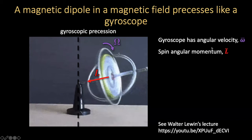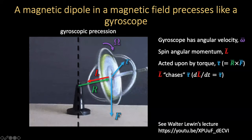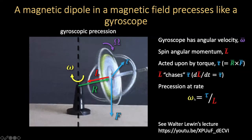The gyroscope has an angular velocity Omega and an associated spin angular momentum L going through its axis. Additionally, there's the force of gravity acting at a distance R from the pivot point, meaning the wheel is acted on by a torque. As a result of this torque, the spin angular momentum will change per Newton's laws. The angular momentum tends to chase the torque, which results in precession at a rate of omega given by the ratio of the torque and the angular momentum. I'd highly recommend MIT physics professor Walter Lewin's lecture on this topic.